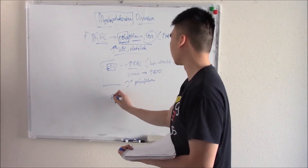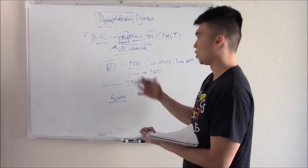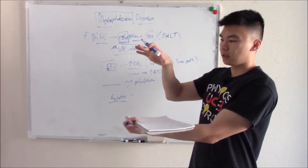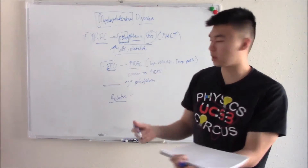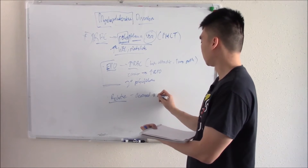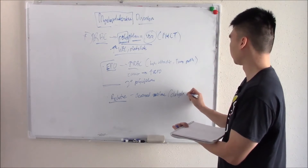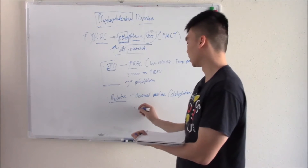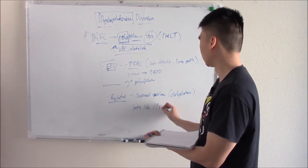Relative polycythemia doesn't mean your cousin has polycythemia. Relative polycythemia means that your plasma is depleted — you're dehydrated. You've reduced the liquid in your blood, and because of that, it looks like you have increased red blood cells relative to if you were well hydrated. So decreased volume, like in dehydration, can make it look like you have increased red blood cells.